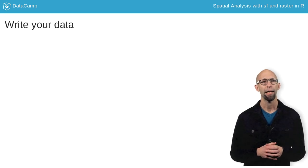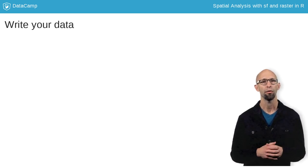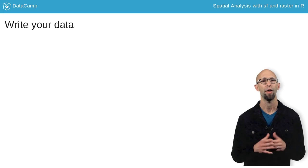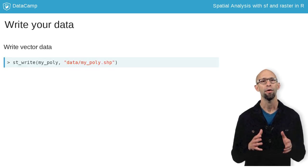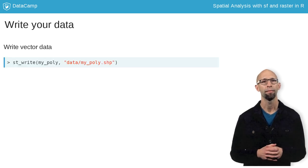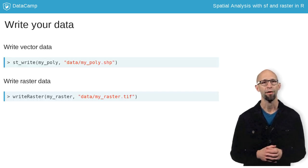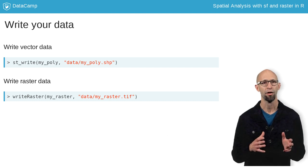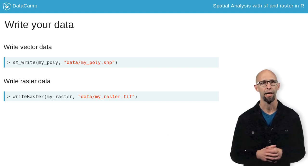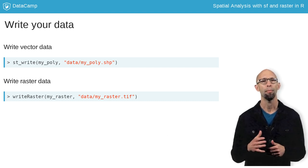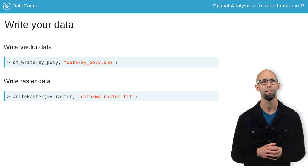You won't be writing data in this course, but I want to point out the functions for writing vector and raster data. For vectors, use st_write, and for rasters, use write_raster. In both cases, like the functions for reading data, they guess the output format based on the suffix.